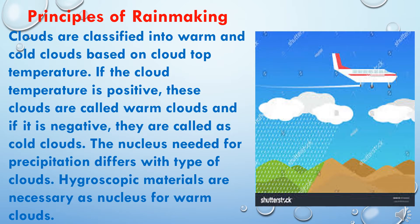Principles of rain making: Clouds are classified into warm and cold clouds based on cloud top temperature. If the cloud temperature is positive, these clouds are called warm clouds, and if it is negative, they are called cold clouds. The nucleus needed for precipitation differs with the type of cloud. Hygroscopic materials are necessary as nuclei for warm clouds.